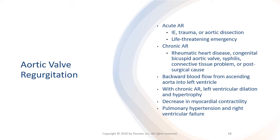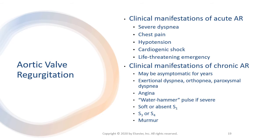Aortic regurgitation causes retrograde, or backward blood flow, from the ascending aorta into the left ventricle during diastole, resulting in volume overload. The left ventricle initially compensates for chronic aortic regurgitation by dilation and hypertrophy. Myocardial contractility eventually declines, and the blood volume in the left atrium and pulmonary bed increases, leading to pulmonary hypertension and right ventricular failure. In acute aortic regurgitation, the patient develops sudden dyspnea, chest pain, and hypotension, indicating left ventricular failure and cardiogenic shock — a life-threatening emergency.